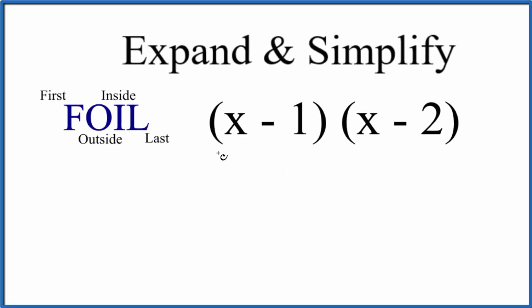Let's expand and simplify (x - 1) times (x - 2) using the distributive law. One way to help us remember that is the FOIL method. Here we'll take the first term, that's the x times the x here, that gives us x squared.